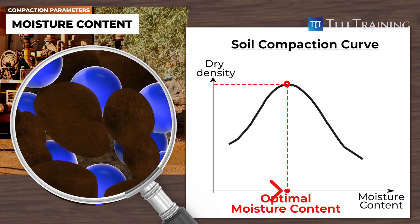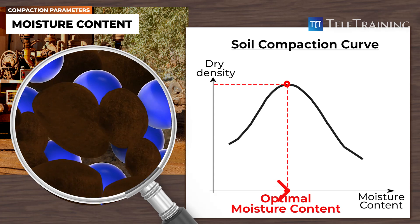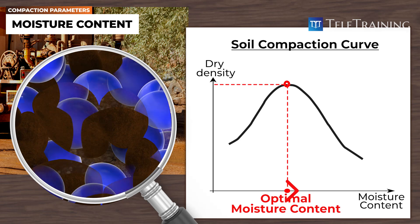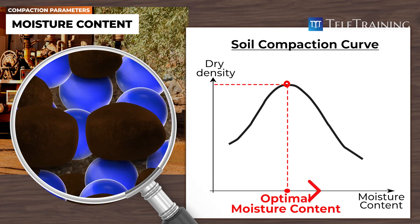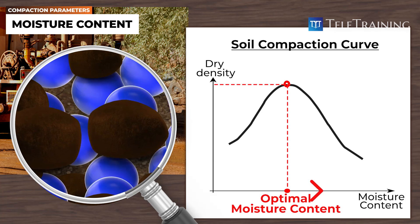At this point, the ideal amount of lubrication is provided without water acting as a barrier to compaction. As the moisture content continues to increase beyond the optimal level, water starts to restrict compaction.